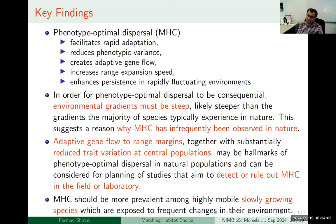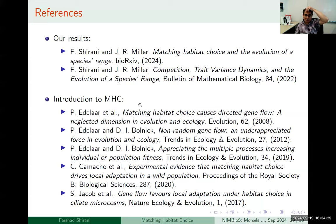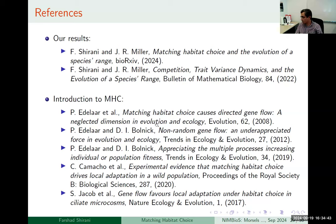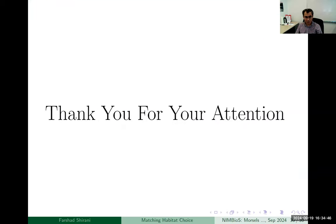Based on our results, matching habitat choice is most beneficial for slowly growing species exposed to frequent environmental changes. Further studies to test matching habitat choice can probably focus on such species — examples include nomadic birds, elephants, and species that can disperse over very long distances and also have good cognitive capabilities to assess their environment. The results obtained are available in two papers — one currently in bioRxiv and one already published. Thank you for your attention.